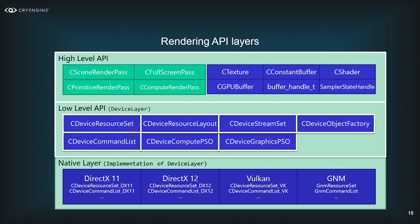We have a pretty strict hierarchical system for the rendering API. At the bottom is the native layer — an implementation layer containing all the code specific to a certain graphics API. On DirectX 11 we have DX11 implementations; on DirectX 12, DX12 implementations; and so on. Ideally this layer has been written once and never touched again.